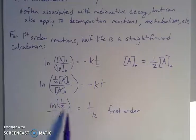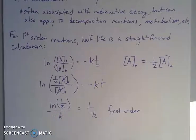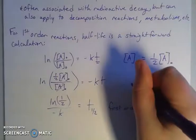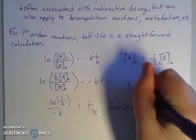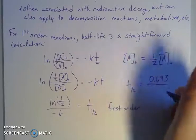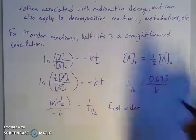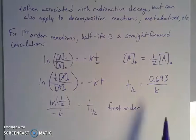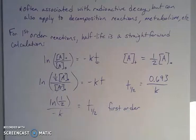The natural log of one-half is negative 0.693, and if you divide that by a negative, you get a positive number. Another way to write this is half-life equals 0.693 over K. That's a really snappy way to do that.